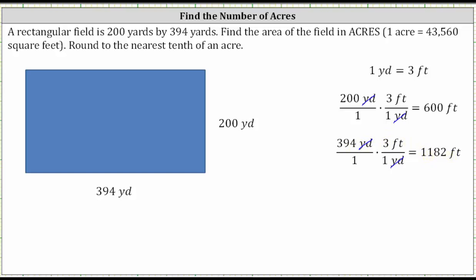So now we know a field that is 200 yards by 394 yards is the same as a field that is 600 feet by 1,182 feet.